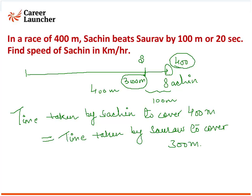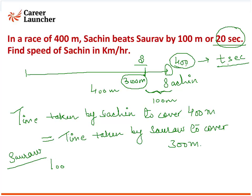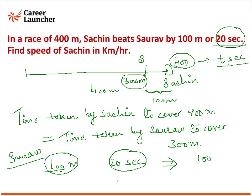Sachin beats Sourav by 20 seconds — matlab jab Sachin ne t seconds mein 400 meter complete kar liya, us hi t seconds mein Sourav 300 meter pe tha, aur usse 20 seconds aur lagenge. To Sourav ko 100 meter cover karne mein 20 seconds lagte hain — matlab wo bhaag raha hai 5 meter per second ki speed se.